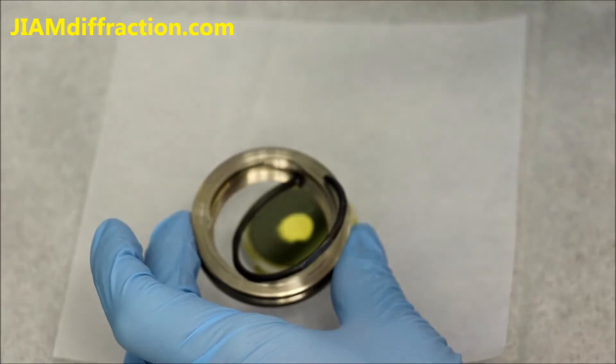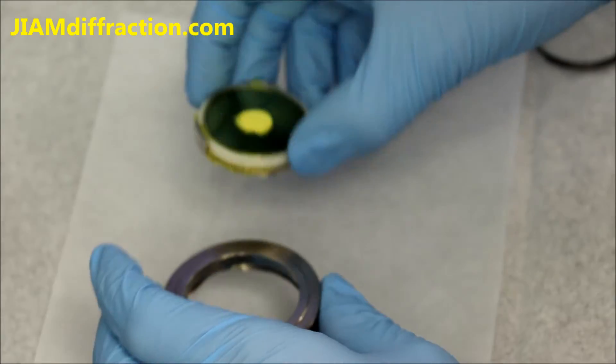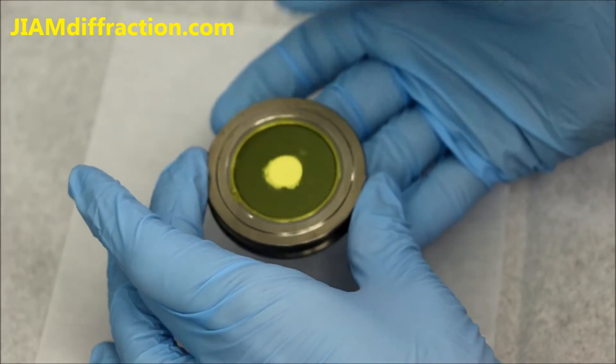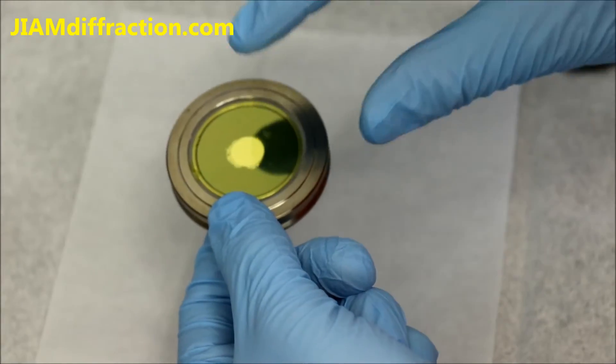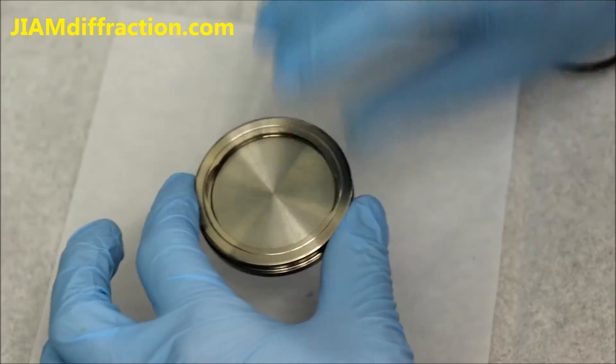And that makes it easier later once you remove it. But let's go ahead and put the sample inside. It just sits inside like that. Now the sample is covered with Kapton so it should be held pretty firmly so we can flip this over now.